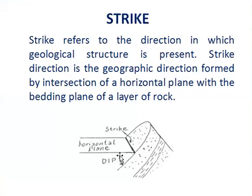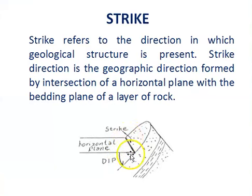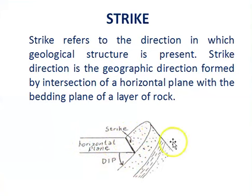Strike is the direction of the line formed by the intersection of the bedding plane and the horizontal plane. As we can see in this diagram, strike is represented by a black solid line, and this line is formed by the intersection of the horizontal plane and the bedding plane of a layer of rock.